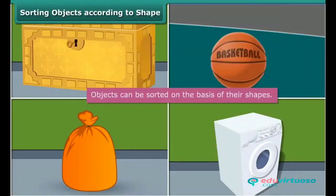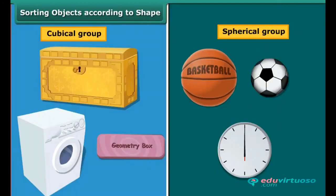A box is a cube or cuboid, whereas a ball is a sphere. A laundry bag is cylindrical in shape whereas a washing machine is cuboidal. We can classify objects on the basis of their shapes as well. Circular or spherical objects form one group, while cubical, cuboidal, square, and rectangular objects form another group. Such a classification allows us to study and analyze the properties of different shapes.